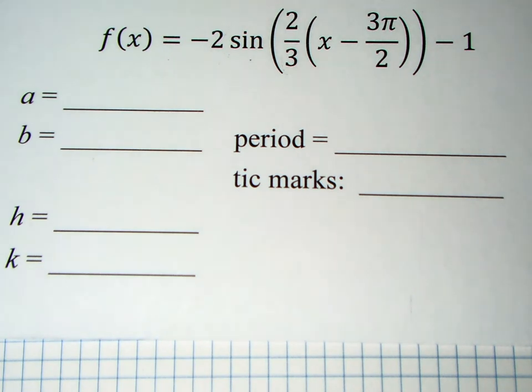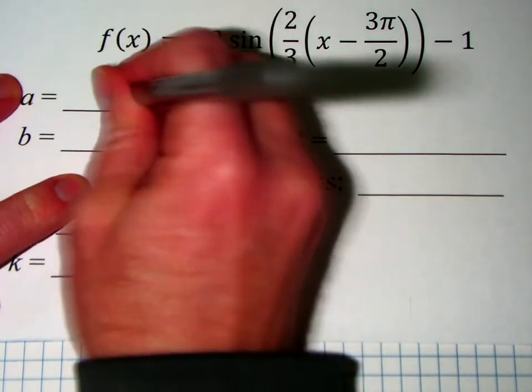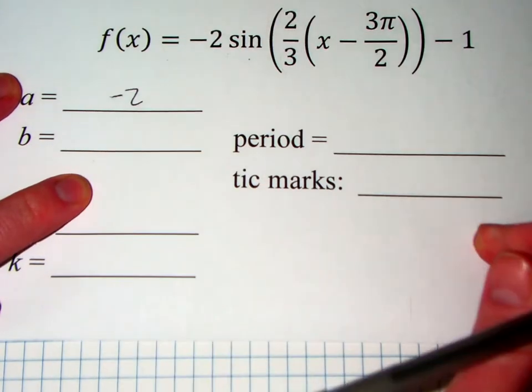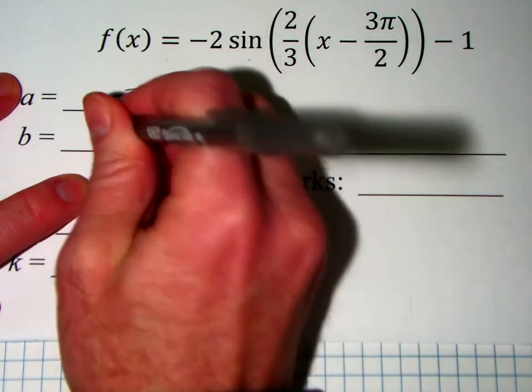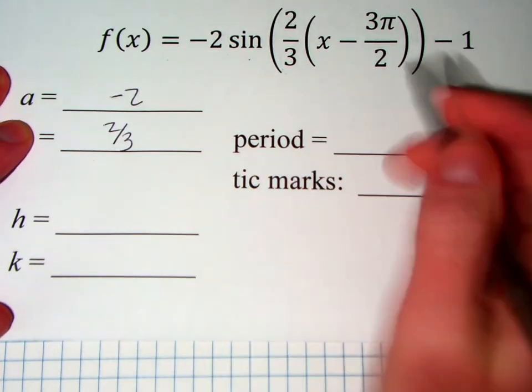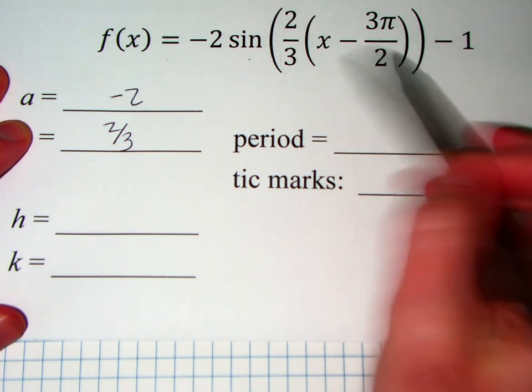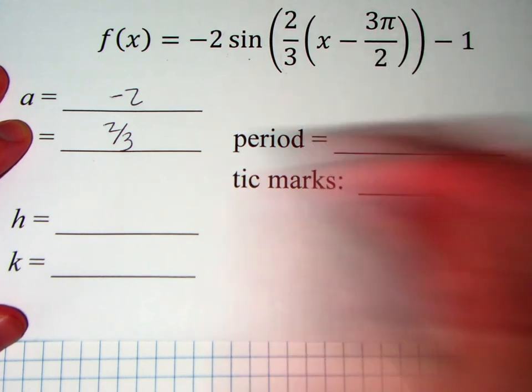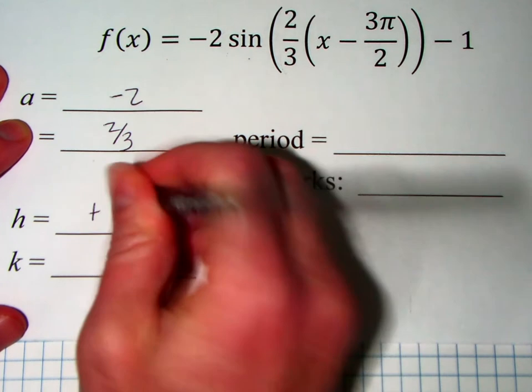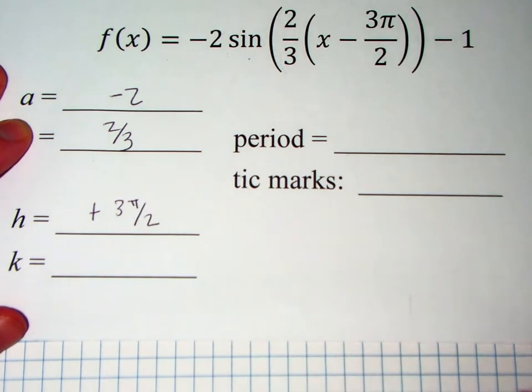So our a value here is negative 2, our b value is 2 over 3, our h value for our horizontal or phase shift, remember to change the sign, so this is going to be a positive 3 pi over 2, and our k value is negative 1.